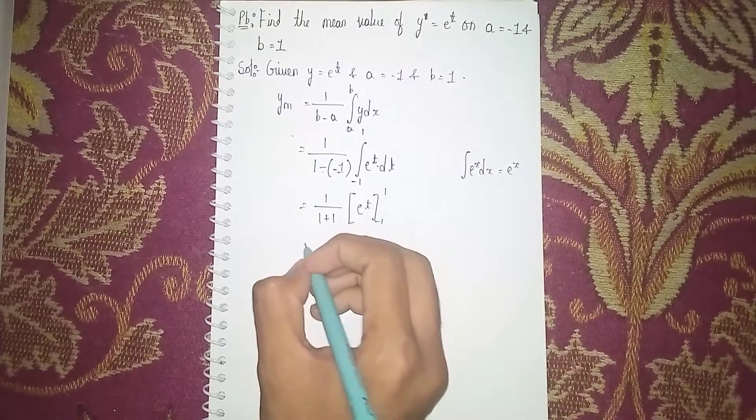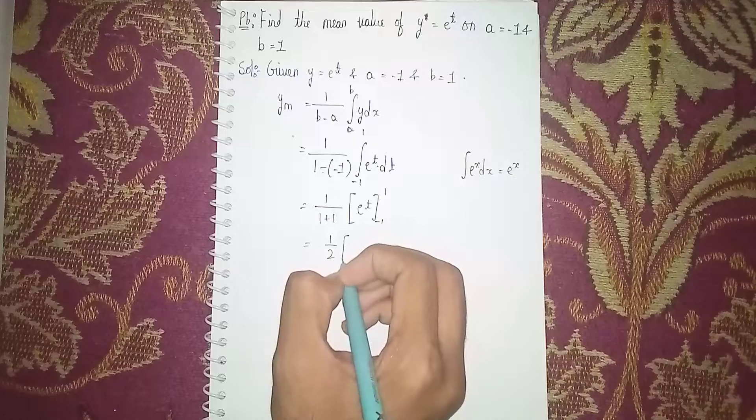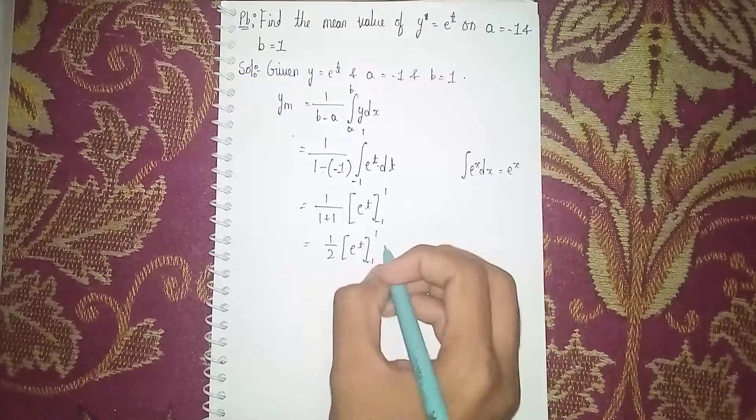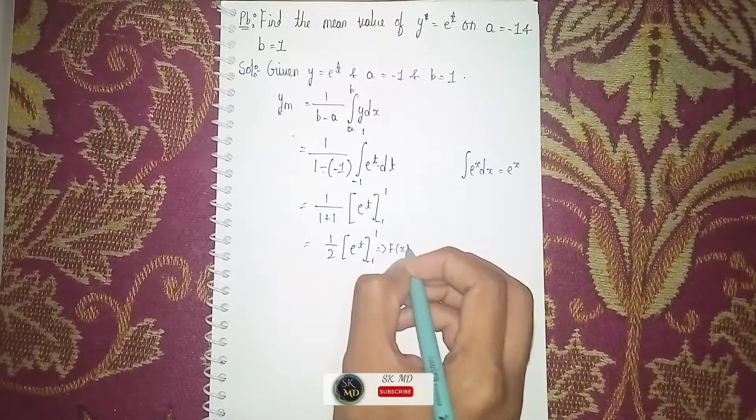That will become e power t with limits minus 1 to 1. So it will become 1 by 2, e power t, with limits minus 1 to 1.